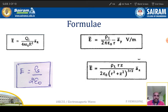Next is electric field intensity due to line charge distribution — this is the infinite line charge distribution. Electric field intensity due to infinite line charge distribution: E is equal to rho-L divided by 2 pi epsilon-0 times r, times unit vector a_r, in volts per meter. Rho-L is the line charge density.